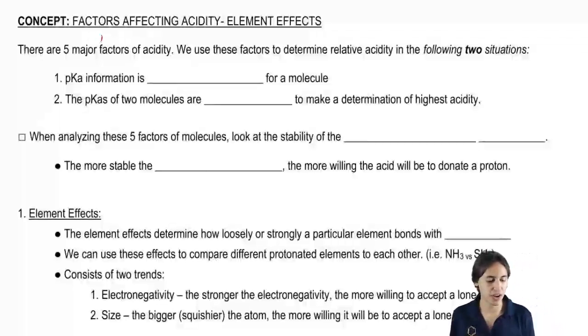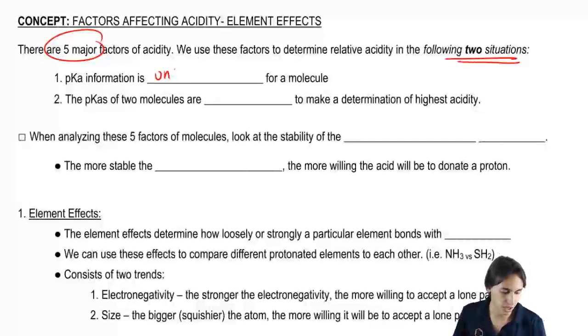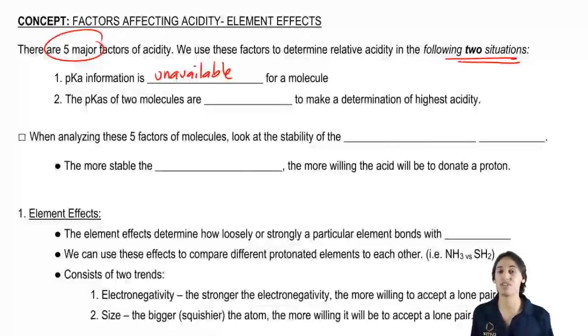As I mentioned, there's five major factors and we're really going to use these factors in two different situations. The first situation is that pKa information is unavailable for a molecule. So what that means is that maybe you didn't memorize it or maybe your professor didn't give it to you or maybe you did memorize it and you just forgot it. Hey, if you're at a test and you don't remember it, it's unavailable. So then we might want to use factors affecting acidity.